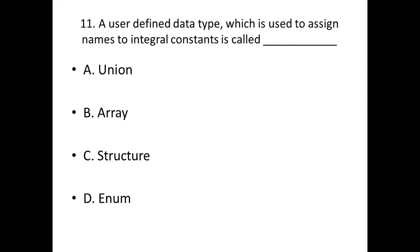11th bit. A user defined data type which is used to assign name to integral constant is called dash. Option A, union. Option B, array. Option C, structure. Option D, enum. Answer is the same. Option D, enum.